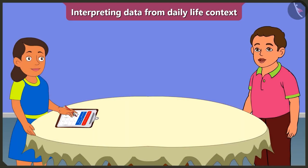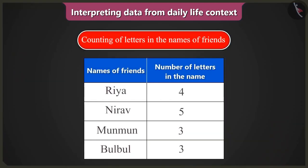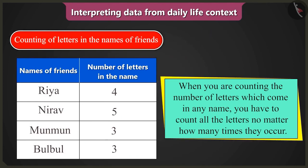Oh Bubbly, you know very well how to collect data and fill it in the table and also how to interpret data from the table. Then how come you made a mistake in filling this table? Mistake in filling the table? Yes, look — you have to write the number of letters of the friends' names in this table. But when you are counting the number of letters in any name, you have to count all the letters even if they are repeated.